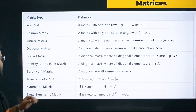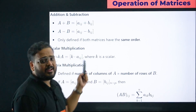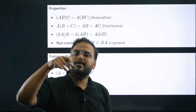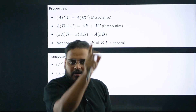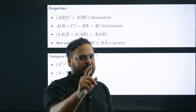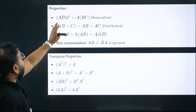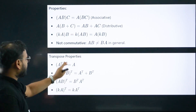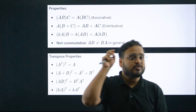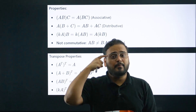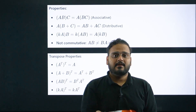Properties of matrices — especially transpose, addition, subtraction, and multiplication — need to be remembered. For multiplication: the number of columns in the first matrix must equal the number of rows in the second matrix. You also have properties of addition over subtraction, multiplication over addition, and transpose of a matrix. I know you already know these, but it's not enough to just know — the formula must come to mind directly when the question appears.